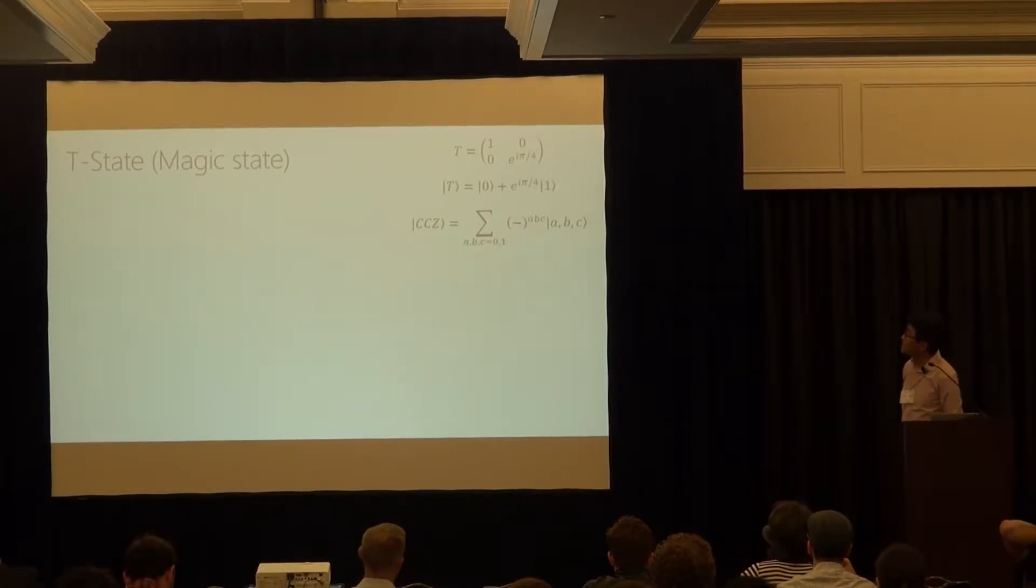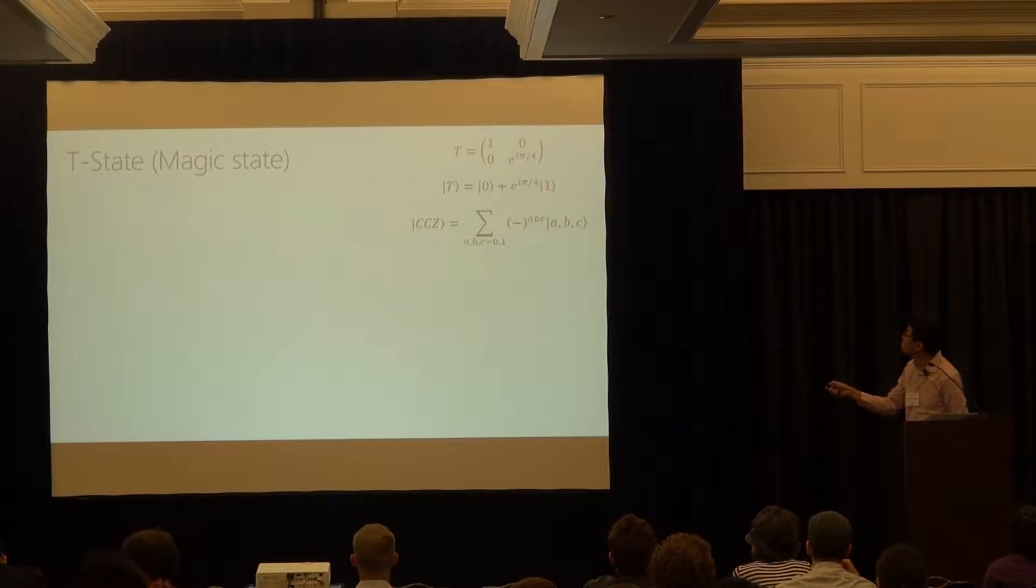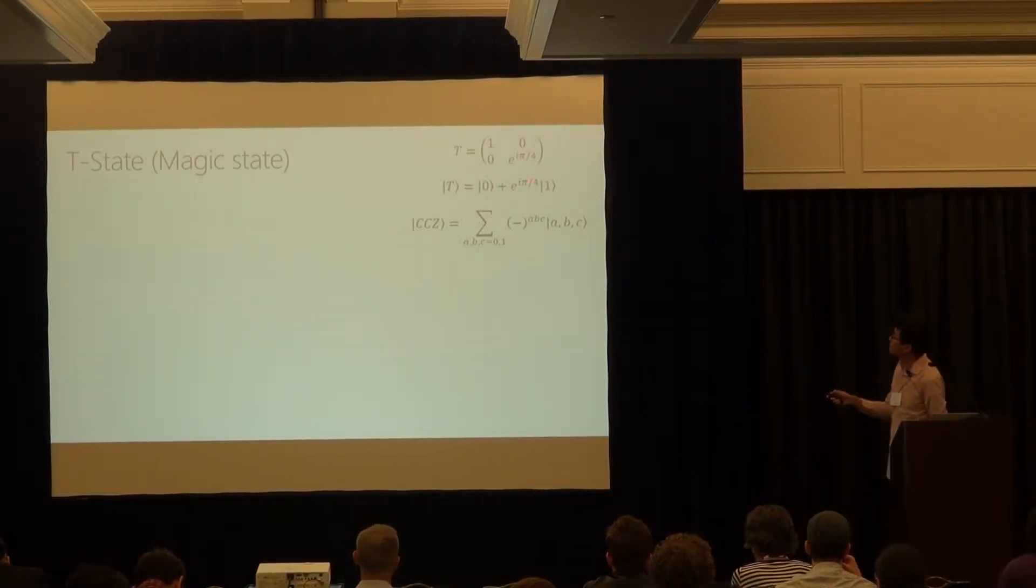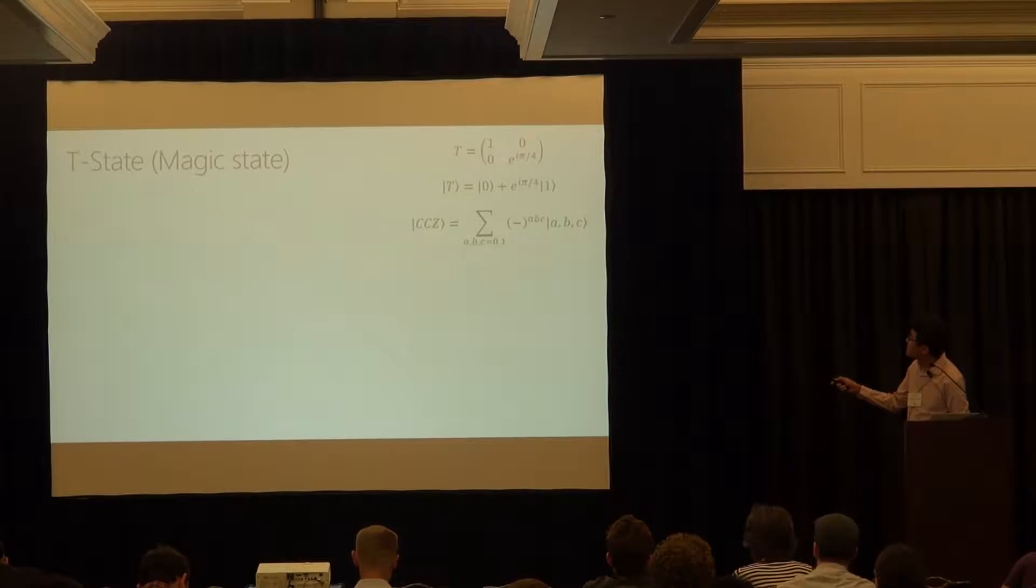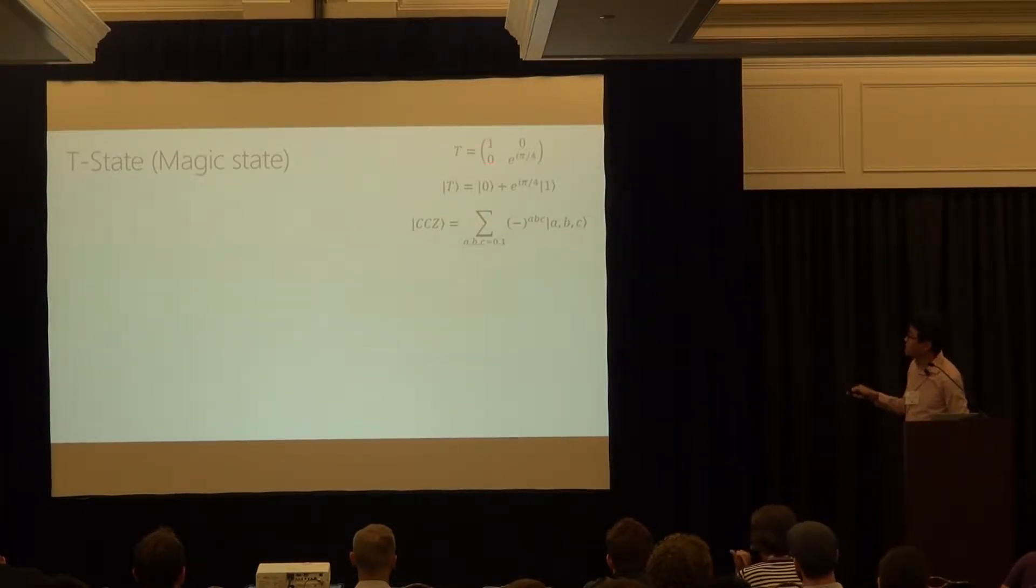So what's T-state? T-state is just one single state noted here. It can be some Clifford deformation of this one, but this is the one that is discussed most often, and a T-gate is this one. They are interchangeable in the sense that if you can prepare x, pointing x-direction eigenstate, then you can just apply this T-gate to obtain T-state.